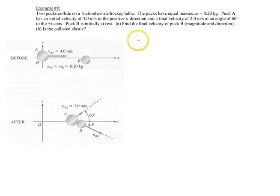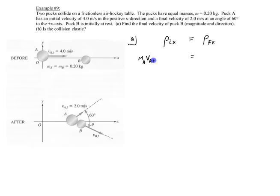The diagram has been drawn. You pick an X and Y coordinate system and show the objects as they approach each other, then after the collision. Let's apply conservation of momentum in the X direction: momentum initially in X equals momentum finally in X. So we have mass A times velocity A initial in X, plus mass B times velocity B initial in X, equals mass A times velocity A final in X, plus mass B times velocity B final in X.